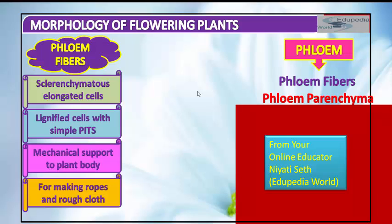Phloem fibers are much elongated, unbranched, and have pointed needle-like apices. The cell wall is quite thick because of lignin. At maturity, these fibers lose their protoplasm and thus become dead — that is why they are called sclerenchymatous cells. Phloem fibers of jute, flax, and hemp are used commercially.